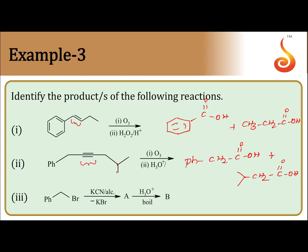Now let us see the third reaction. One of the reactants is C6H5CH2Br, treated with KCN. So we get C6H5CH2CN — this is Option A. This compound on hydrolysis: cyanide on hydrolysis gives a carboxylic acid. So we get C6H5CH2COOH. These are the products.